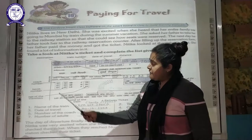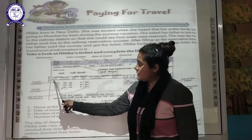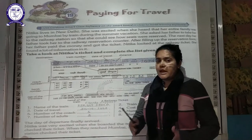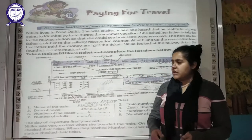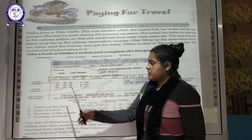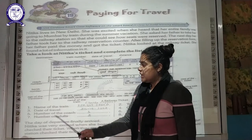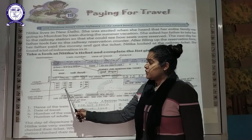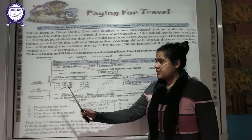On the left-hand side, you can see the coach number. There are a large number of coaches — S1, S2, S3 — and their coach number was S7. The berth numbers are 42, 43, and 44. These are their seat numbers.